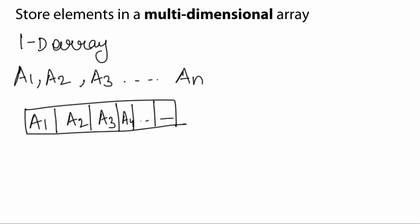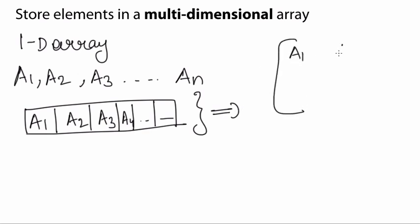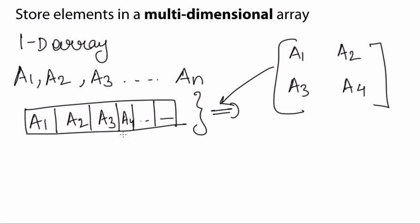Let's jump to the case of a multidimensional array now. In a multidimensional array, the elements have to be stored in my memory space just the same way as a single dimensional array. If I had a multidimensional array like this, it had to be stored in the same way as my one dimensional array was stored in the memory space.